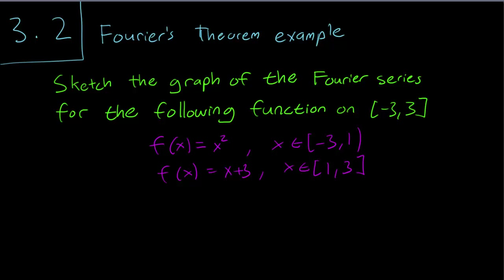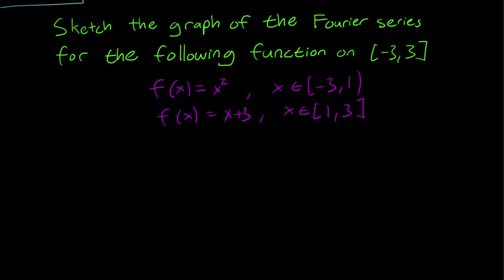Hello class, this is section 3.2, and in this video we are going to discuss a simple example of using Fourier's theorem. This is a typical question that you might get asked: to sketch the graph of the Fourier series for the following function on minus 3 to 3, with a function that is x squared from minus 3 to 1, and equals x plus 3 from 1 to 3. So let's first graph the function itself.